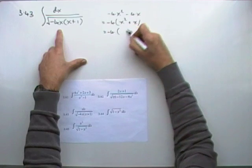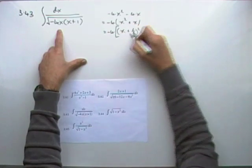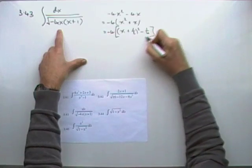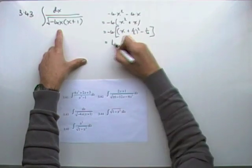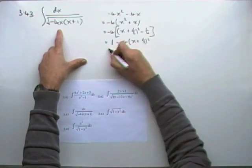So negative 4 times that would break down to (x + 1/2)² but that introduces a quarter, so take away the quarter. Negative 4 times negative quarter is 1, so I've got 1 - 4(x + 1/2)².